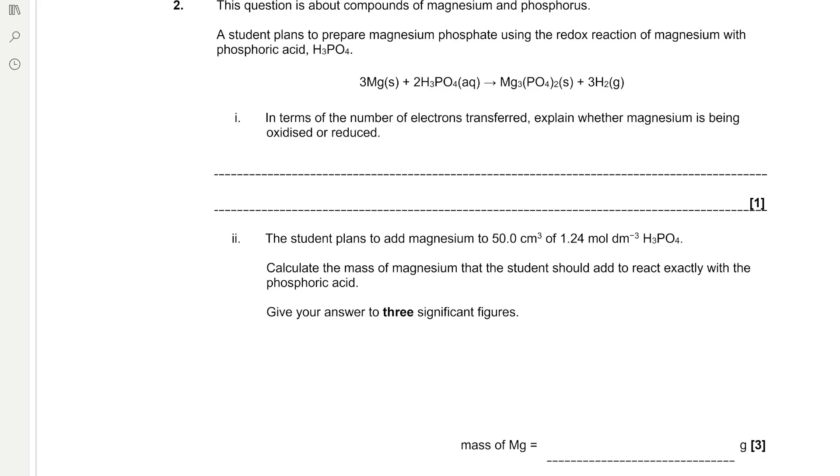Question 2: This question is about compounds of magnesium and phosphorus. A student plans to prepare magnesium phosphate using the redox reaction of magnesium with phosphoric acid, H3PO4. The equation shows 3Mg + 2H3PO4 → Mg3(PO4)2 + 3H2. In terms of the number of electrons transferred, explain whether magnesium is being oxidised or reduced.